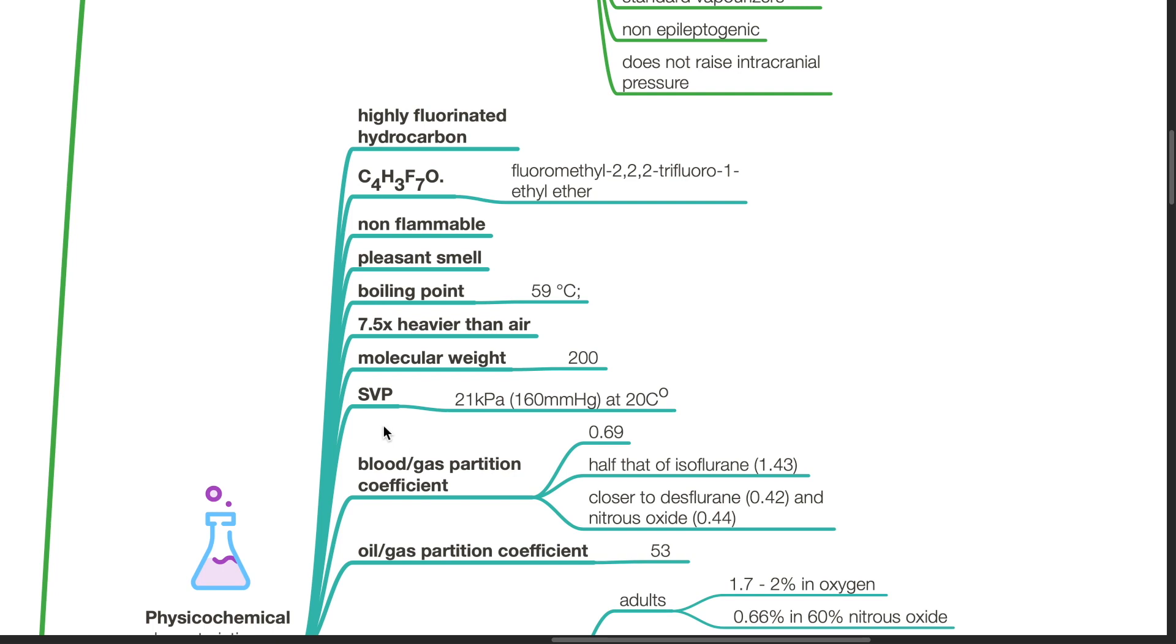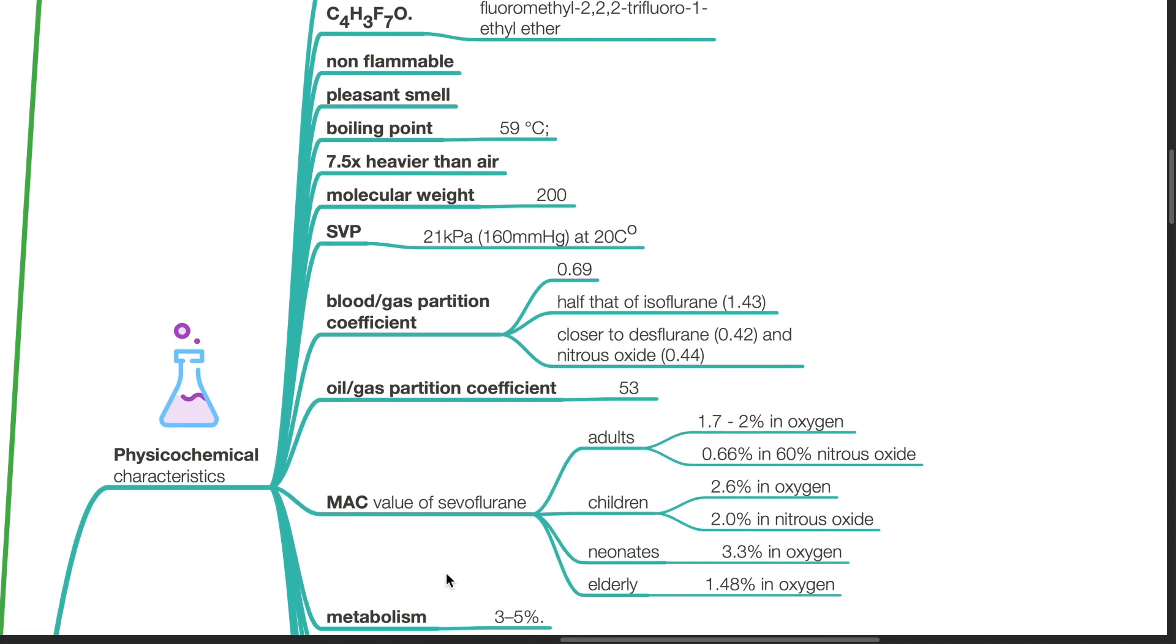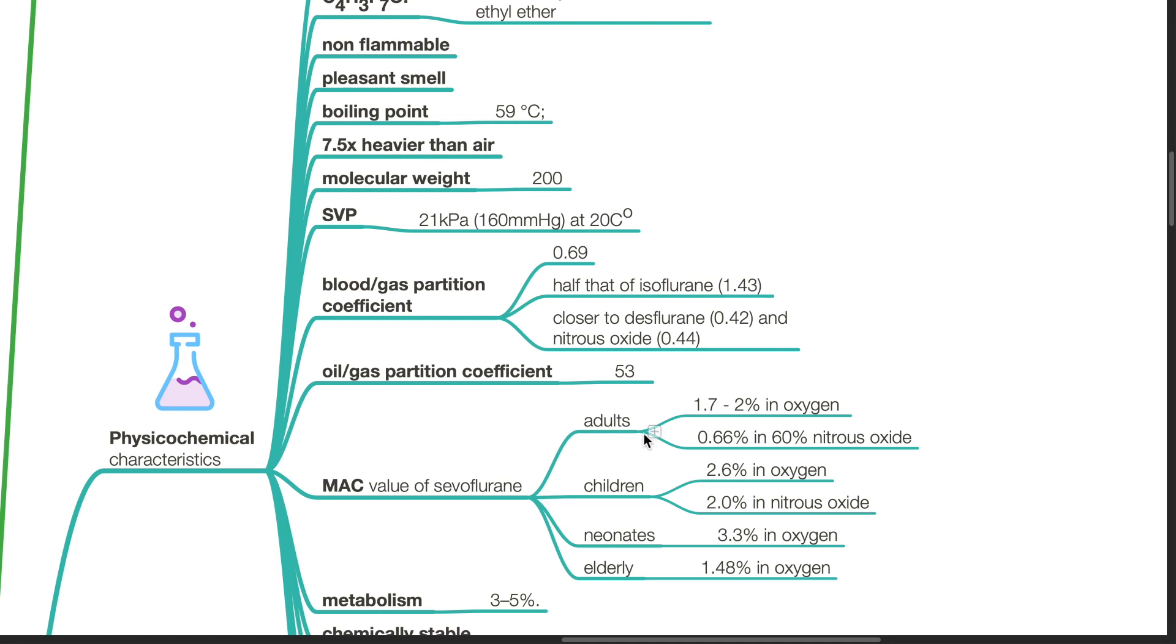Saturated vapor pressure is 21 kPa or 160 mmHg at 20 Celsius. Blood gas partition coefficient is 0.69, half that of isoflurane which has 1.43, closer to desflurane 0.42 and nitrous oxide 0.44. Oil gas partition coefficient is 53. MAC value of Sevoflurane in adults is 1.7% to 2% in oxygen, 0.66% in 60% nitrous oxide. In children, the MAC value is 2.6% in oxygen and 2.0% in nitrous oxide.